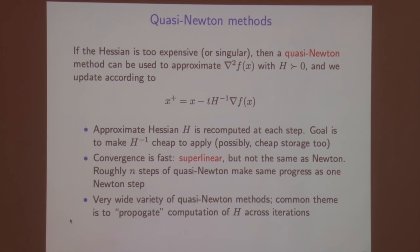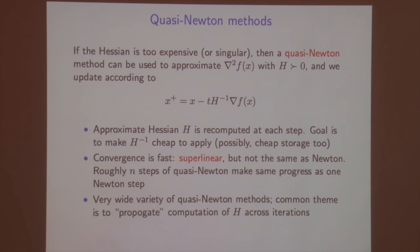There's a huge variety of quasi-Newton methods. The common theme is to propagate the computation of H across iterations. Rather than recomputing the approximation from scratch at step k, I take my approximation from step k−1 and update it cleverly to get a reasonable approximation at step k. That's what makes quasi-Newton methods fast.